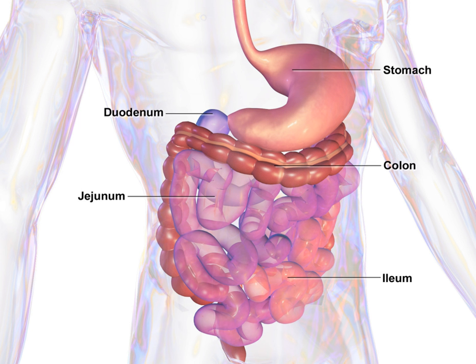The gut is an endoderm-derived structure. At approximately the 16th day of human development, the embryo begins to fold ventrally with the ventral surface becoming concave in two directions — the sides fold in on each other and the head and tail fold toward one another. The result is that a piece of the yolk sac, an endoderm-lined structure in contact with the ventral aspect of the embryo, begins to be pinched off to become the primitive gut. The yolk sac remains connected to the gut tube via the vitelline duct; usually this regresses during development, but if it does not, it is known as Meckel's diverticulum.